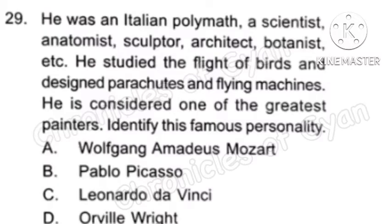Question 29: He was an Italian polymath — a scientist, anatomist, sculptor, architect, botanist, and more. He studied the flight of birds and designed parachutes and flying machines. He is considered one of the greatest painters. Identify this famous personality. The correct answer is Option C, Leonardo da Vinci. Some of his great works include the Mona Lisa and The Last Supper.